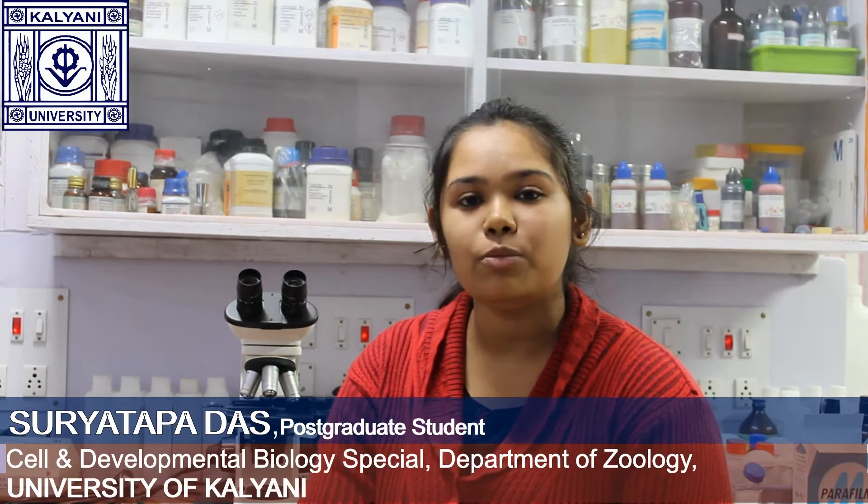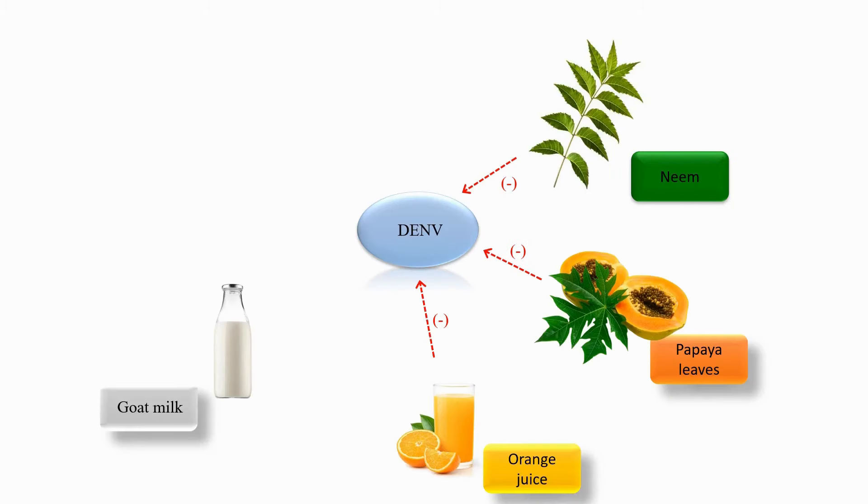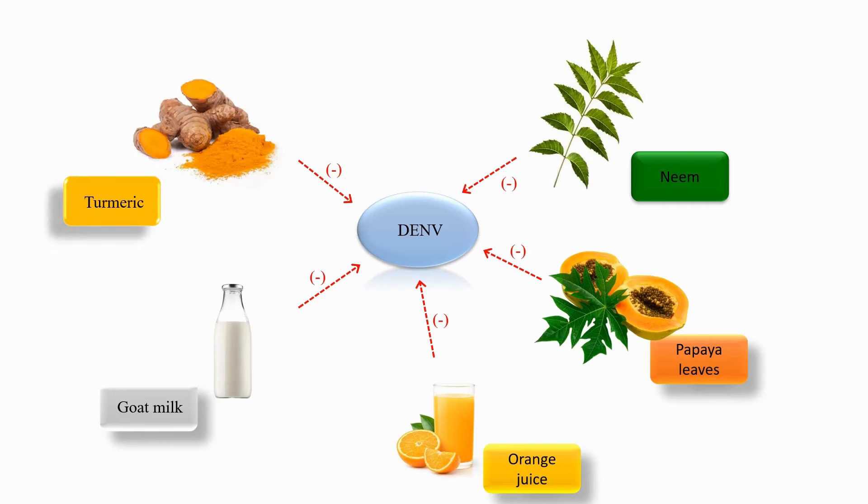Nature is still a very rich source of compounds useful for humanity. Natural medicines are known to be less toxic and to have fewer resistance issues, thereby potentiating patients' immune systems. It has been proven that natural extracts of neem, papaya leaves, orange juice, goat milk, and turmeric are effective in combating dengue.